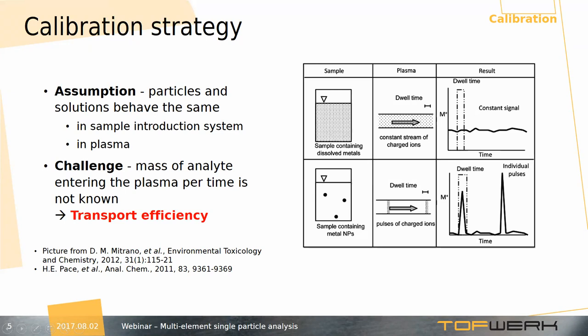Solution, in contrast, is introduced in the form of a continuous flow of ions, forming a continuous signal. If we assume that solution and particles behave in the same way in the sample introduction system and in plasma, and we know the mass flux of our solution — how much is being introduced within this dwell time and the corresponding signal — then from these figures of merit we can convert our signal intensity into element mass.